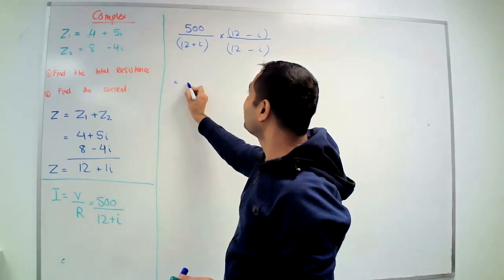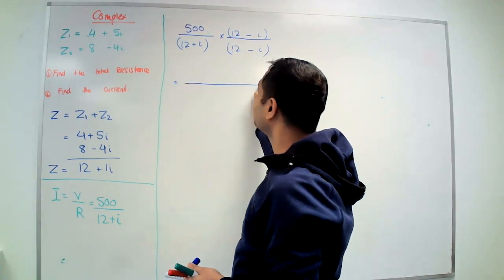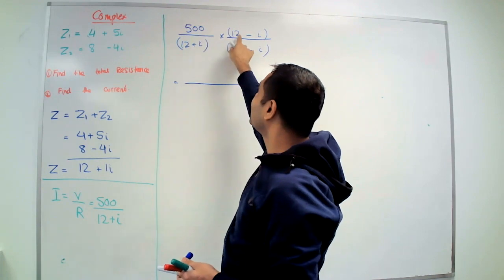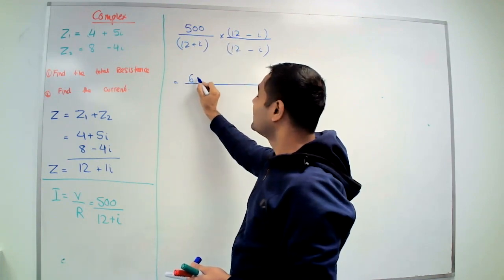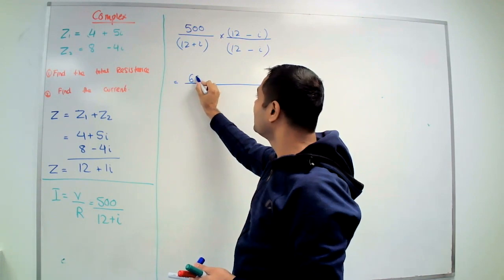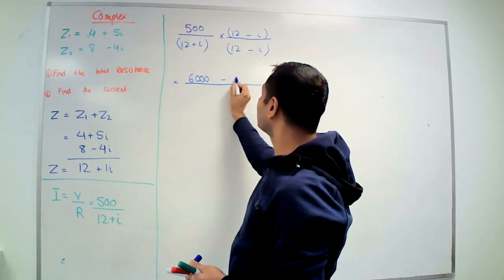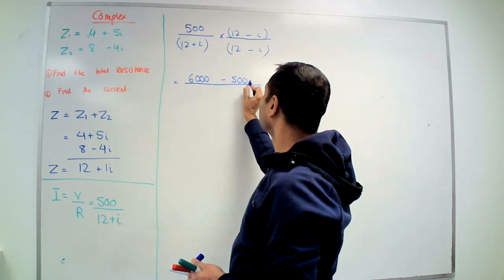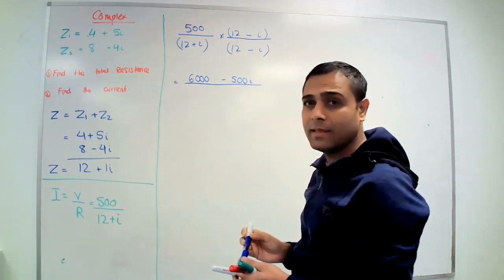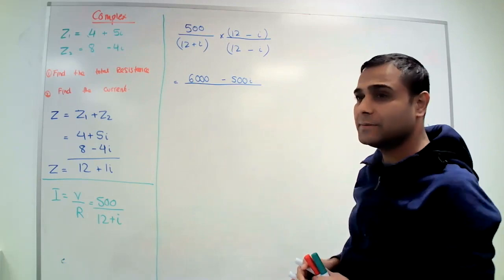Now the top one, let's multiply the top. 500 times 12 is how much? 6000, all right. 500 minus i is minus 500i. I'm fine with that one.